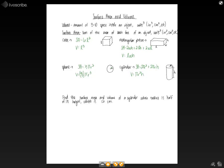And so this is just some of the different equations for surface area and volume. And now if we do a problem, it says find the surface area and volume of a cylinder whose radius is half of its height, which is 12 centimeters.